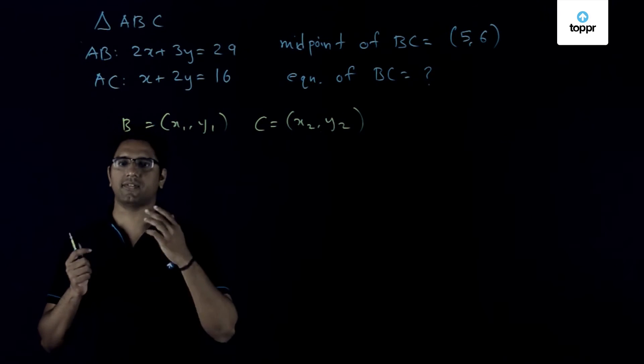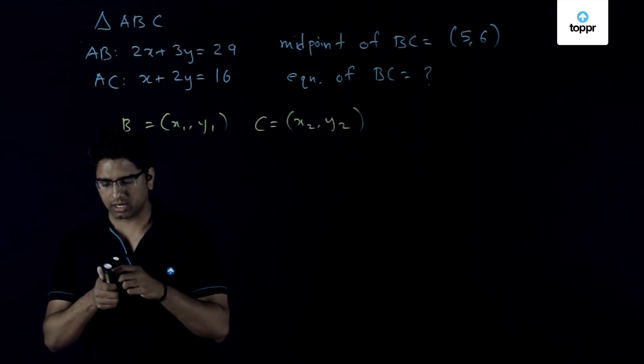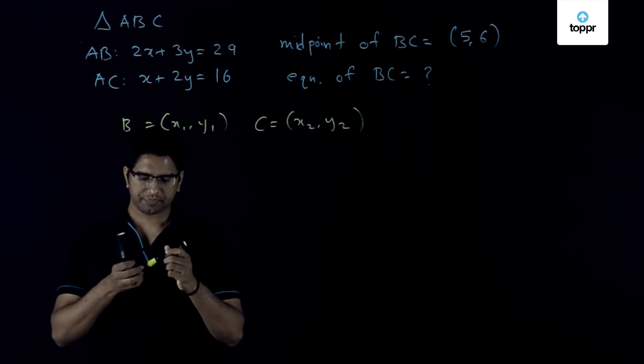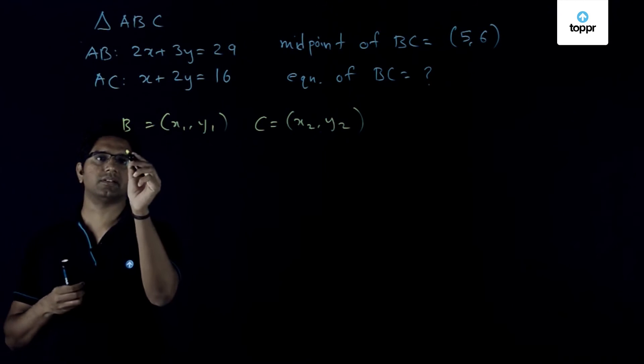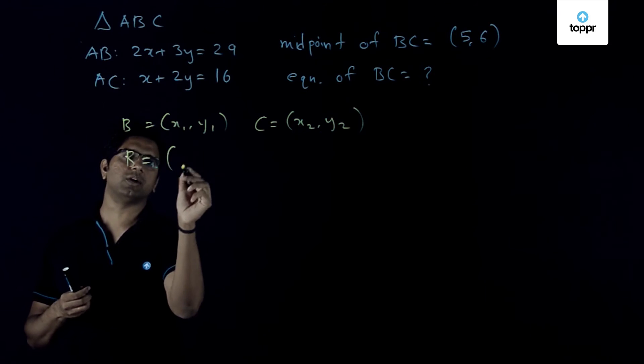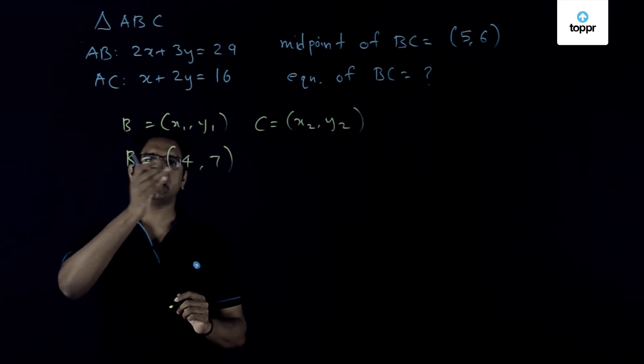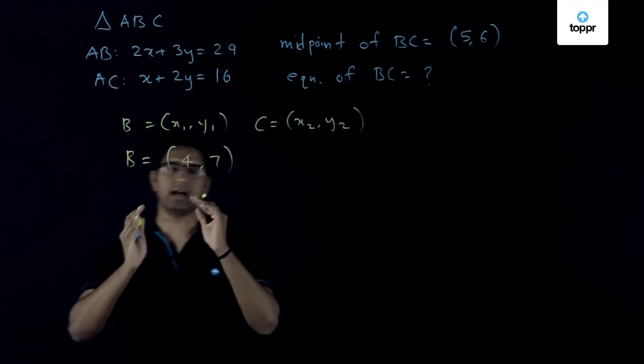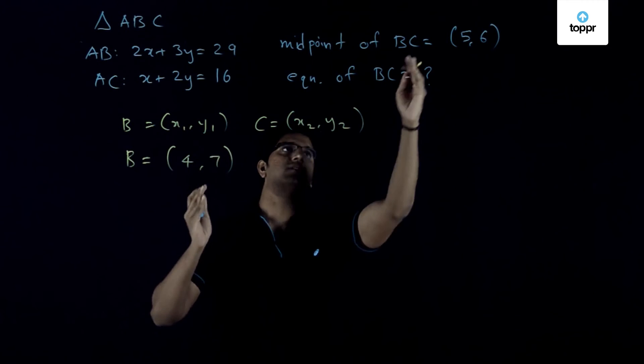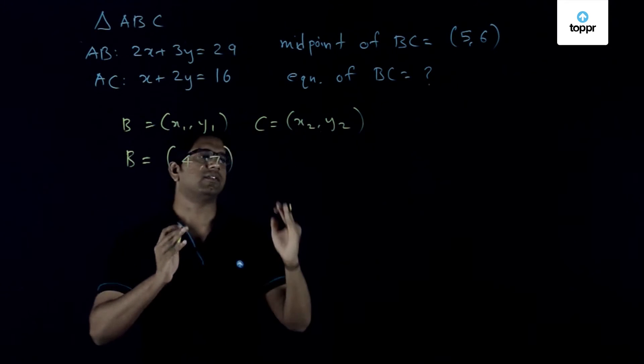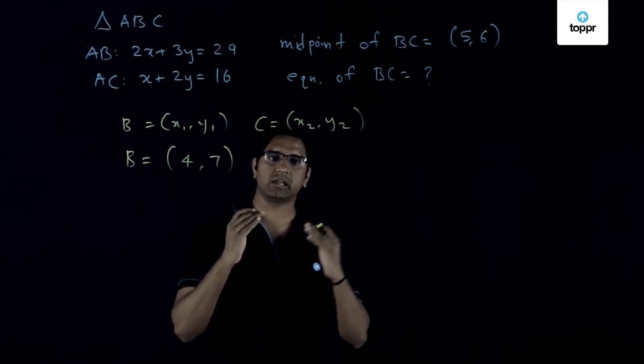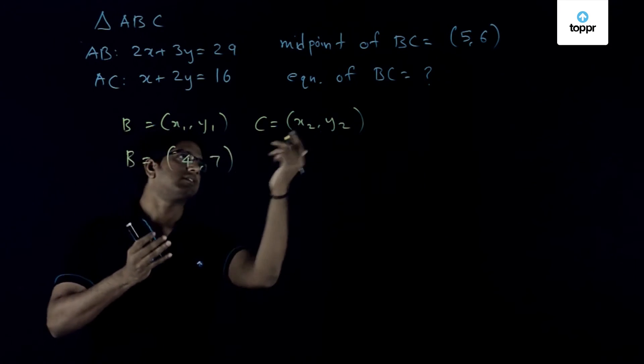That is a simple exercise. B's coordinates will be obtained as (4, 7). Since I have obtained the coordinates of B as (4, 7), now I have another point which lies on BC, which is the midpoint of BC, and one can immediately therefore write down the equation. In fact, it's quite simple.